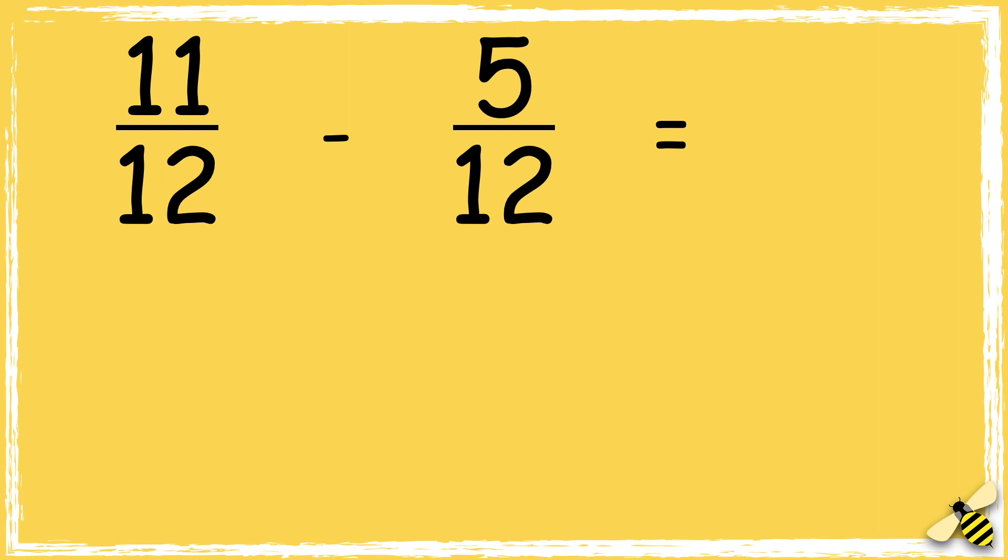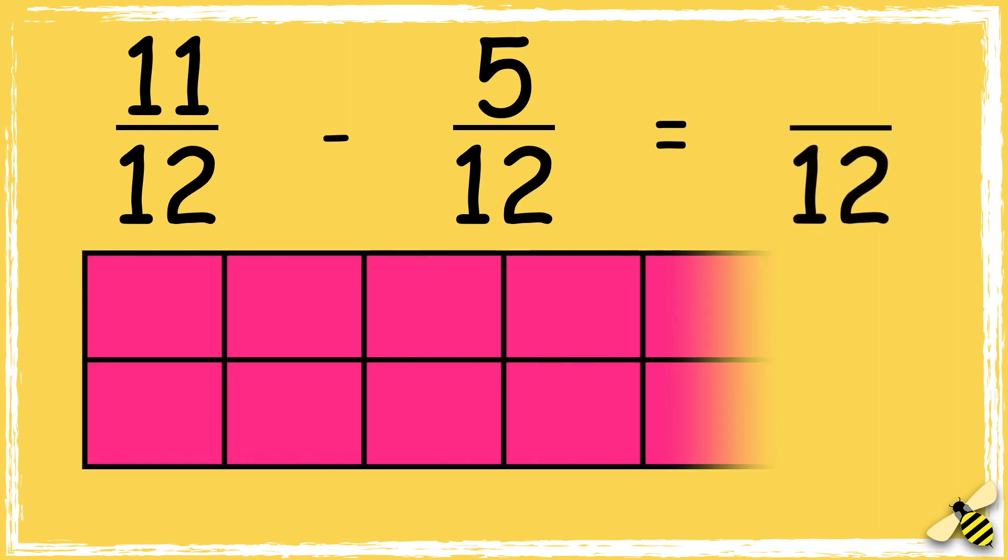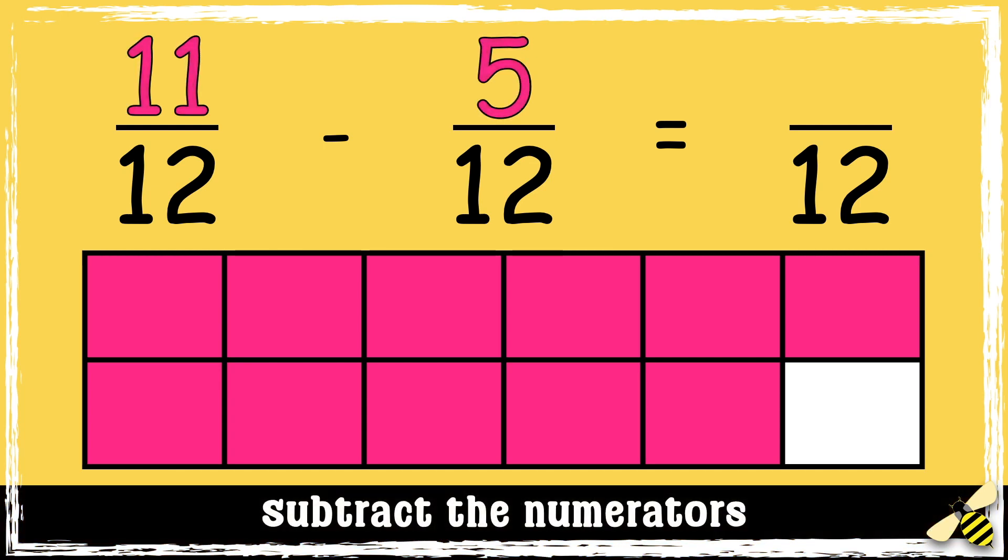Let's have a look at one more. 11 twelfths take away 5 twelfths. So remember the denominator stays the same. So we need to subtract the numerators.